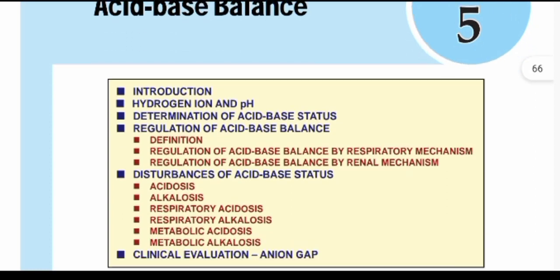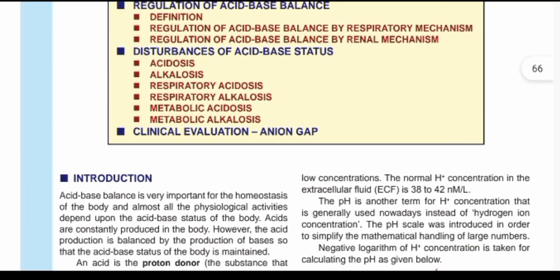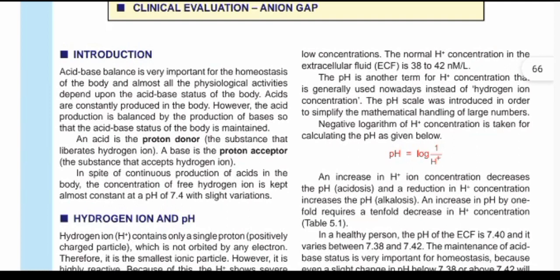The outline from the textbook covers: first, the introduction to hydrogen and pH; second, determination of acid-base status; third, the regulation of acid-base balance; fourth, the stubbornness of acid-base status; and finally, the clinical evaluation which deals with your anion gap.